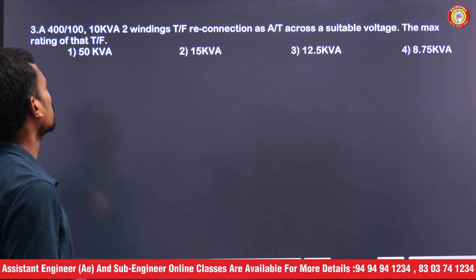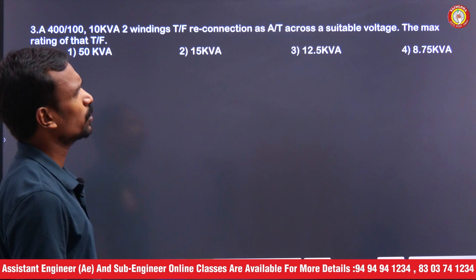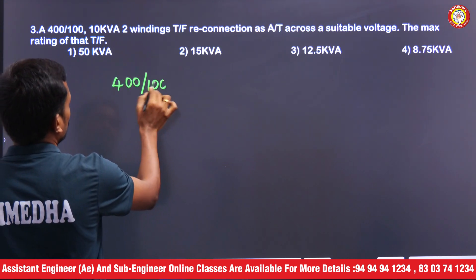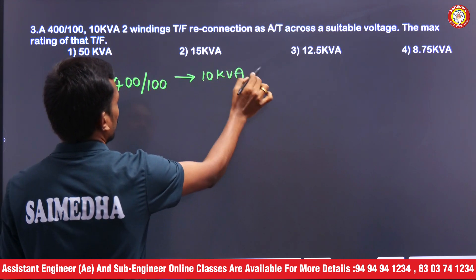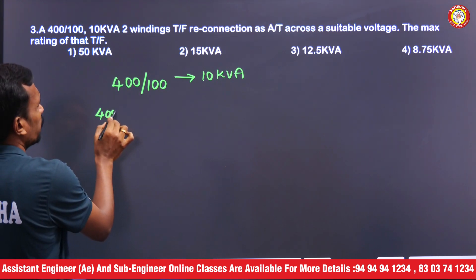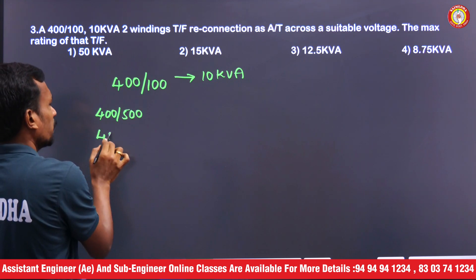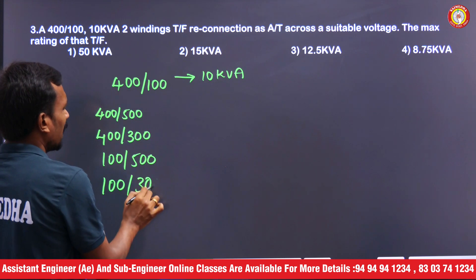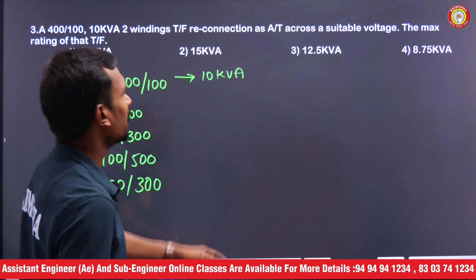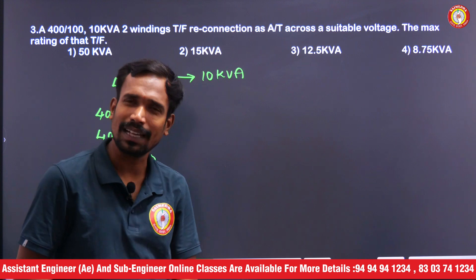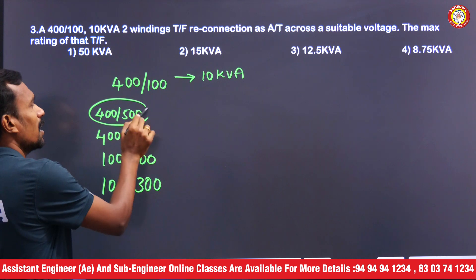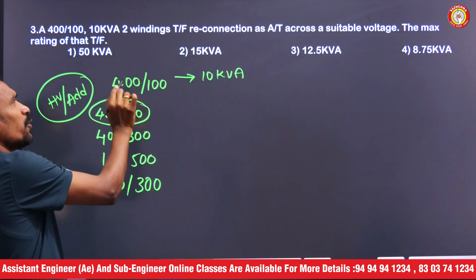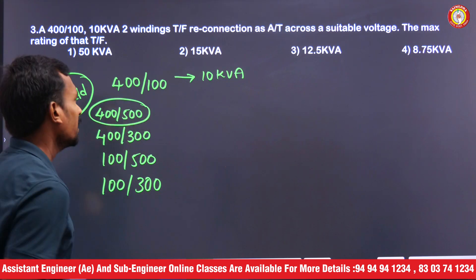A 400 by 100 volts, 10kVA two-winding transformer is reconnected as an auto transformer across a suitable voltage source. What is the maximum rating? To get the maximum rating, the auto transformer should be the HV side by addition — that is 400V by the addition of 400 and 100, which gives 500V. Both windings share 400V. So for 100V the rating is 10kVA, and for 500V the rating is 50kVA. The maximum rating is 50kVA.